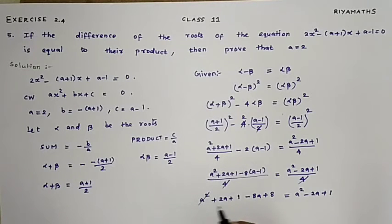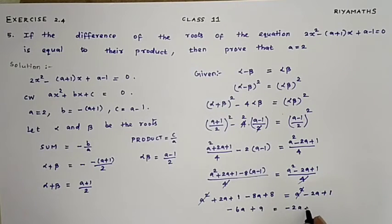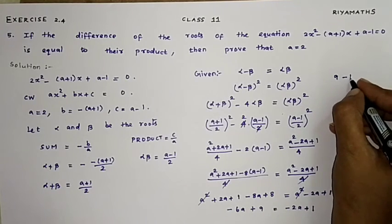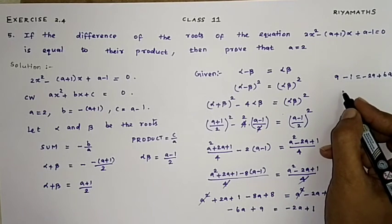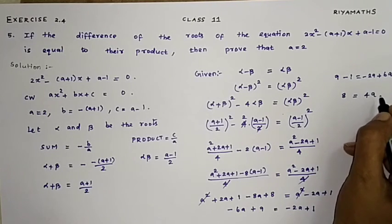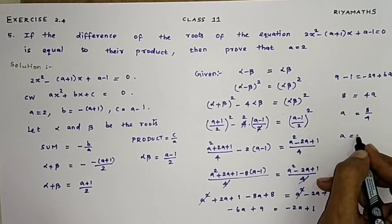Simplifying, a² cancels on both sides. Combining like terms: 2a minus 8a gives minus 6a, and 1 plus 8 gives 9, so minus 6a plus 9 equals minus 2a plus 1. Rearranging: 9 minus 1 equals 2a minus 6a, giving 8 equals minus 4a. Wait, rearranging correctly: 6a minus 2a equals 1 minus 9 is rearranged to get 4a equals 8, so a equals 2.